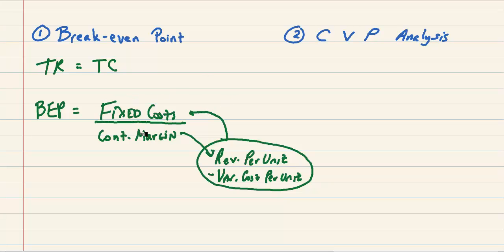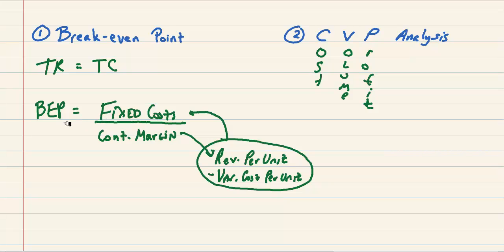Fixed cost divided by contribution margin gives us a break-even point, and we can look at break-even point in units or in dollars. The second topic we need to tackle today is called CVP analysis — CVP stands for cost, volume, profit analysis. Instead of trying to figure out just where we break even, we can manipulate cost, volume, and profit to come up with different projections and scenarios looking forward. Our break-even point is actually the foundation for CVP analysis.